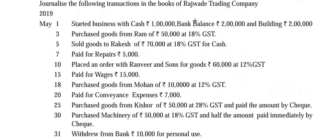The third entry: sold goods to Rakesh for Rs. 70,000 at 18% GST for cash. Here sales have taken place - cash is coming in and goods are going out. So: cash account debit, to sales account credit, to output Central GST account credit, to output State GST account credit. GST is 18%, so 9% Central GST and 9% State GST.